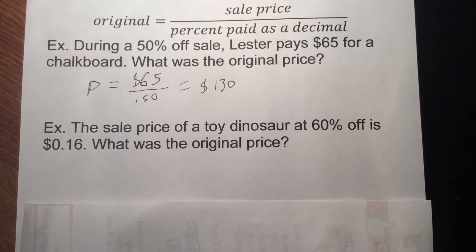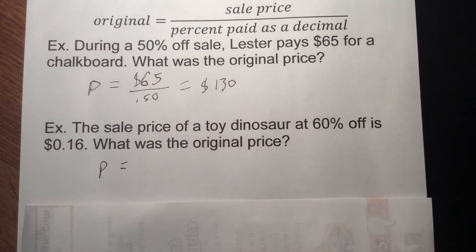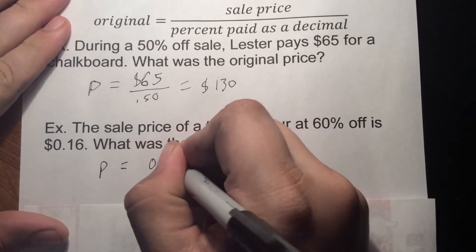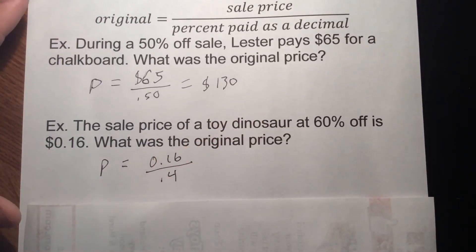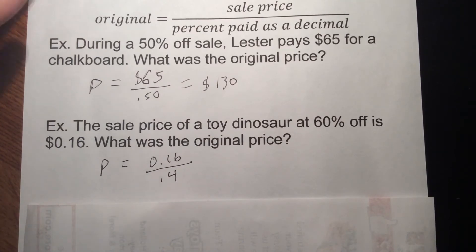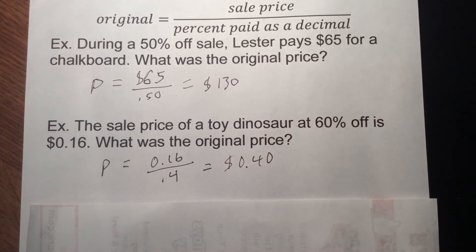So another one here: the sales price of a toy dinosaur is 60% off, and its price was $0.16. Again, we're going to use P as our original price. We know we're going to pay 16 cents. So we have 0.16 on top. If 60% is how much off it is, we would then pay 40%. Just take 100 minus the percent off — that gives you the percent you paid. Make that into a decimal, so we're going to divide by 0.4. And if you do that, you're going to get $0.40 as your price.